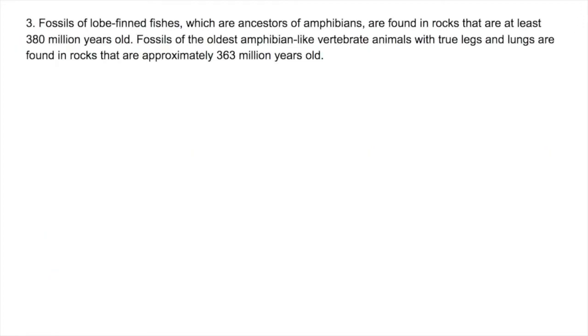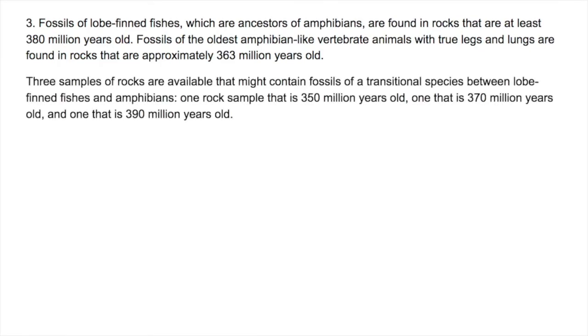Question 3. Fossils of lobe-finned fishes, which are ancestors of amphibians, are found in rocks that are at least 380 million years old. Fossils of the oldest amphibian-like vertebrate animals with true legs and lungs are found in rocks that are approximately 363 million years old. Three samples of rocks are available that might contain fossils of a transitional species between lobe-finned fishes and amphibians: one rock sample that is 350 million years old, one that is 370 million years old, and one that is 390 million years old.